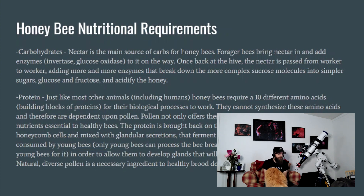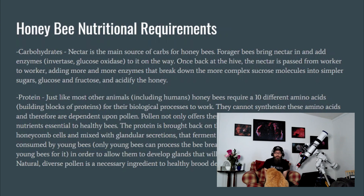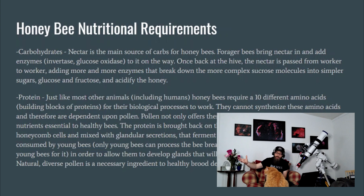Carbohydrates is one of the honeybee's nutritional requirements. Nectar is the main source of carbs for honeybees. Forager bees bring in nectar and add the enzymes invertase and glucose oxidase to it on the way back from the flowers to the hive. Once back at the hive, the nectar is passed from worker to worker, adding more enzymes that continue to break down the more complex sucrose molecules into simpler glucose and fructose.